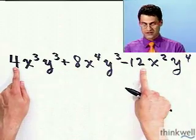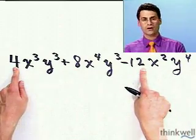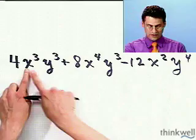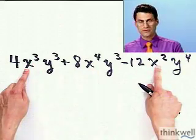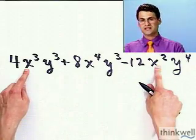In fact, you can pull out a 4 from everybody. And notice there's a lot of x's. There's x³ here, so there's 3 of them here, there's 4 of them here, and there's 2 of them here.